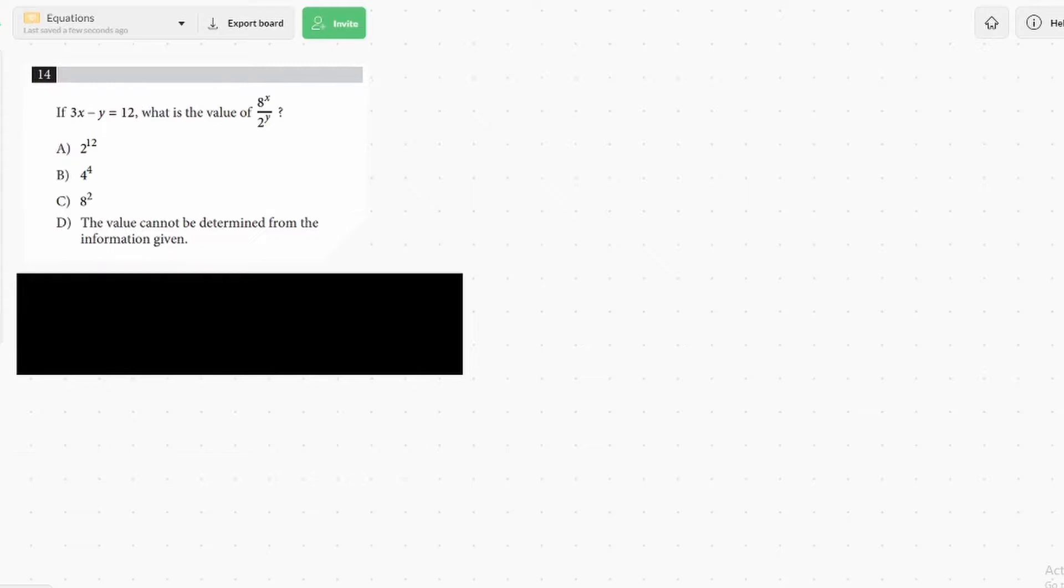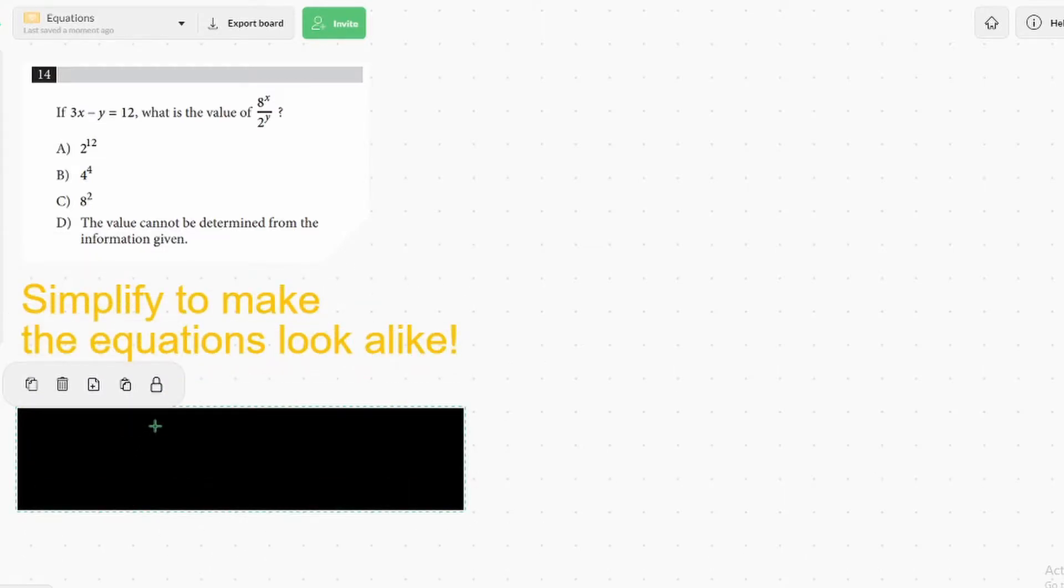Let's go to our second question and our second tip. This question reads, if 3x minus y equals 12, what is the value of 8 to the x over 2 to the y? And this tip here is simplify to make the equations look alike. And this is especially true with questions involving variable exponents.